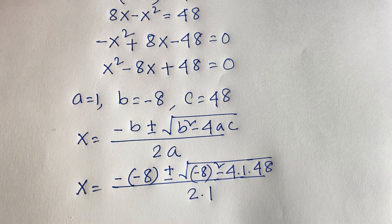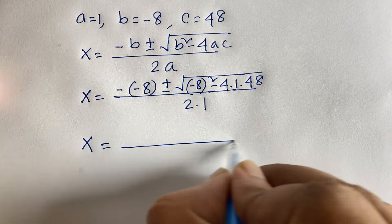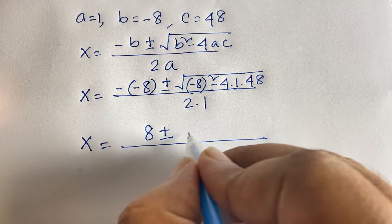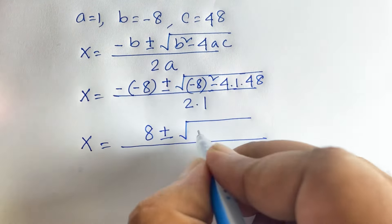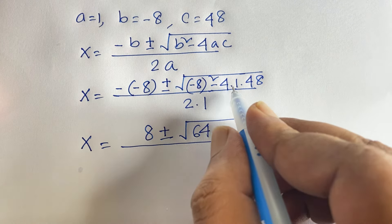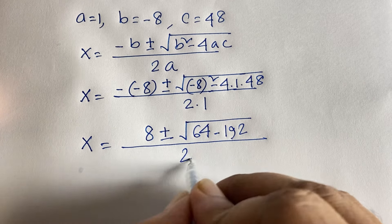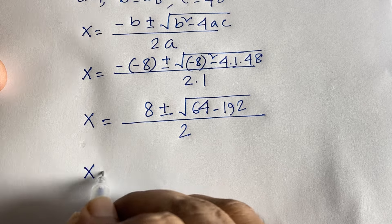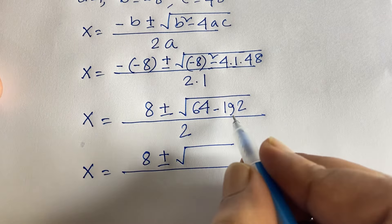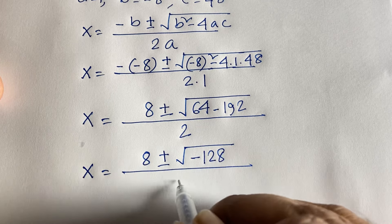Substituting: x equals minus (minus 8), which is positive 8, plus or minus square root of (minus 8) squared minus 4 times 1 times 48, over 2 times 1. That gives us 8 plus or minus square root of 64 minus 192, over 2.